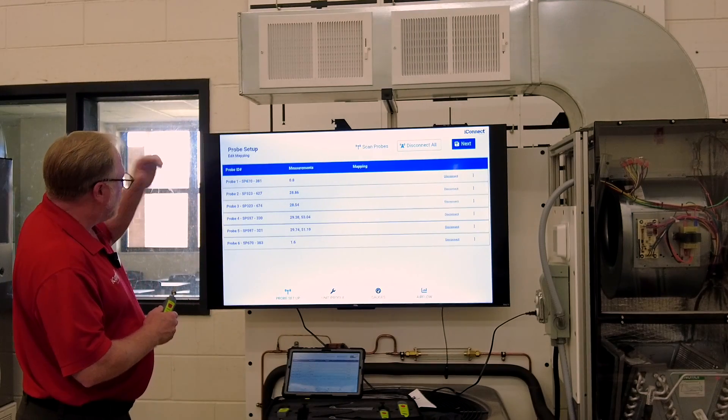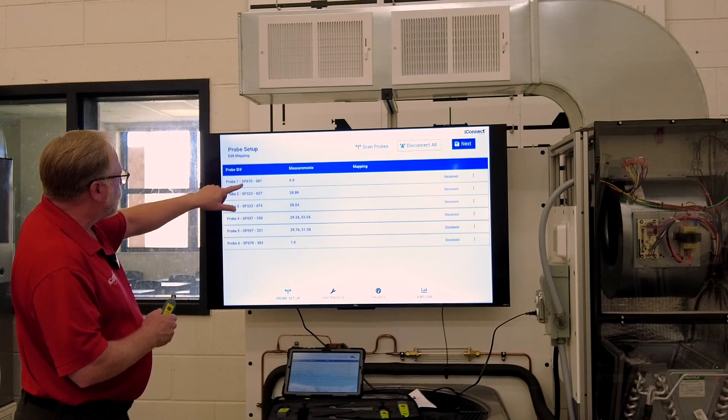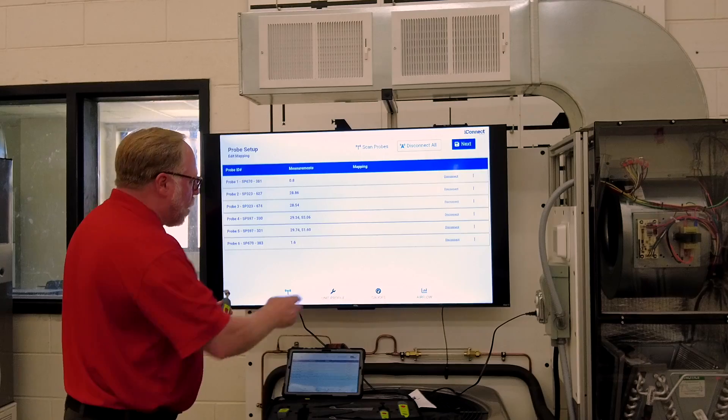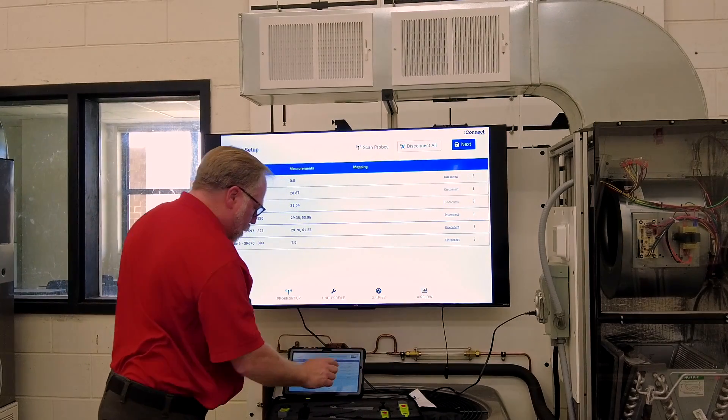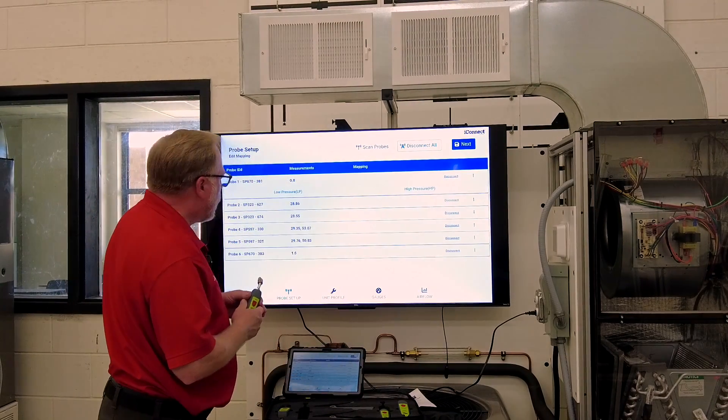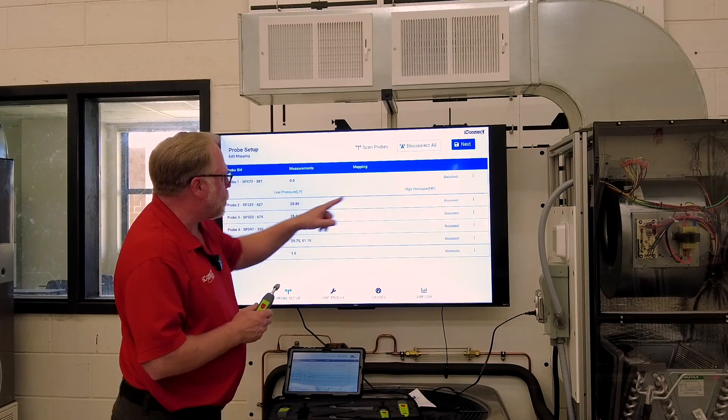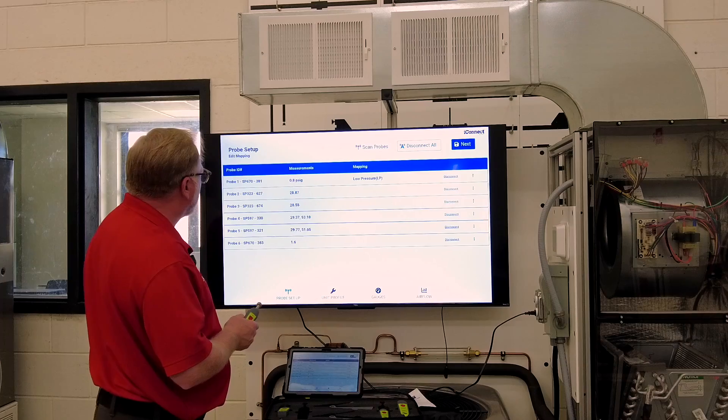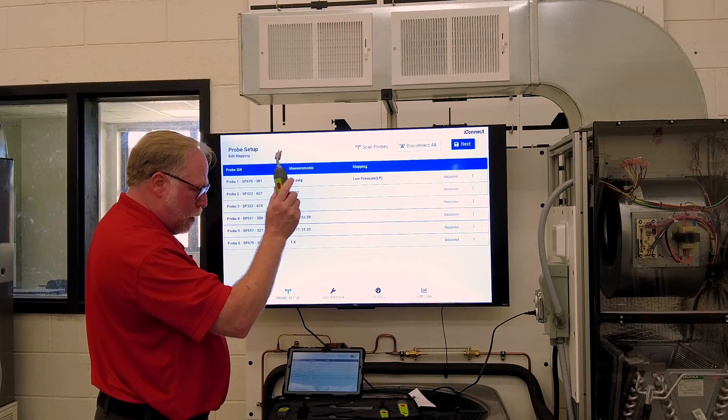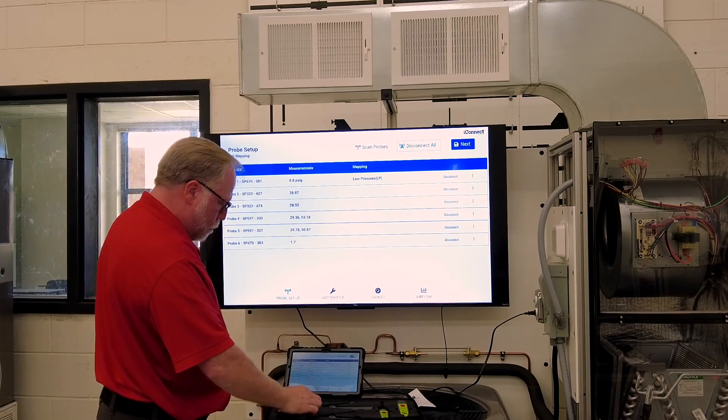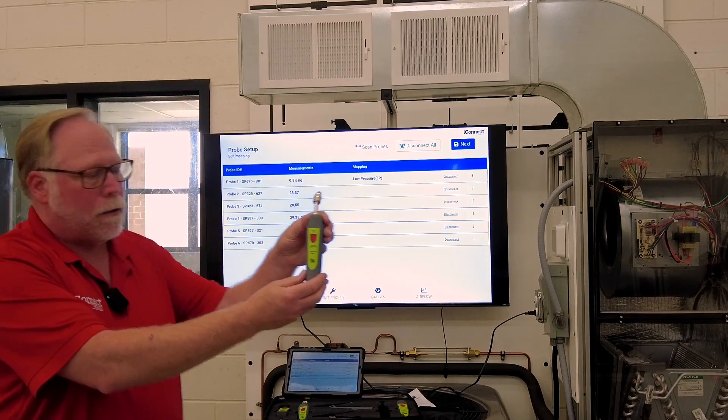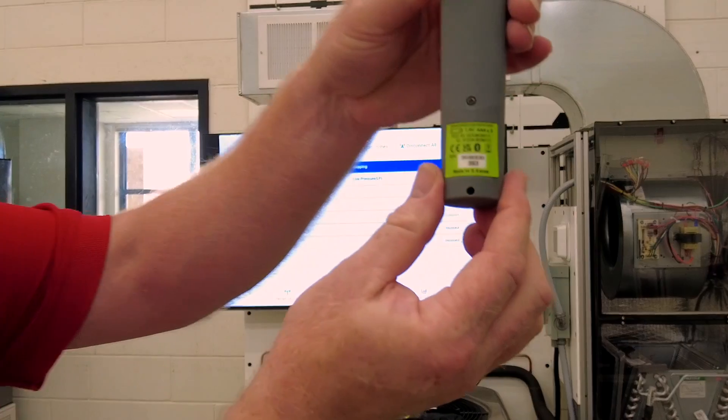So let's go with the SP670 381. So it happens to be the first one. Look at there, probe one, SP670-381. So I'm going to press these three little buttons here and I can choose whether it's going to be high pressure or low pressure. I haven't hooked it up yet. I'm just going to tell it it's low pressure. So my 381 is my low pressure probe.